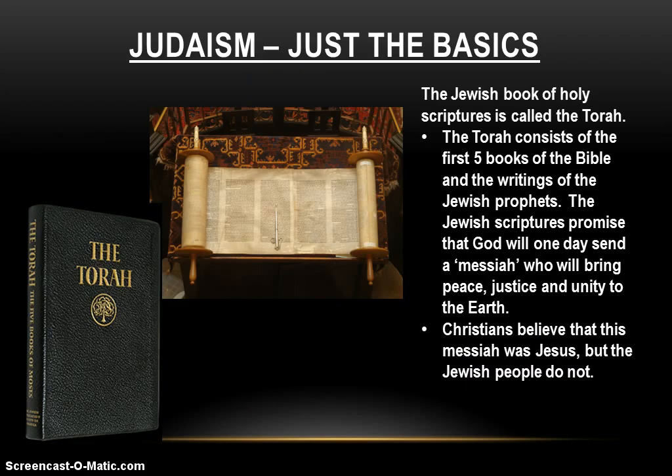The Jewish holy book of scriptures is called the Torah. From Hebrew, Torah literally translates as 'the writings.' The Torah consists of what are, for Christians, the first five books of the Bible, as well as the writings of the Jewish prophets. In fact, the Old Testament of the Christian Bible is basically the Jewish Torah. The Jewish scriptures promise that God would one day send a Messiah who will bring peace, justice, and unity to the earth — Messiah means a deliverer. Jewish people believe that this Messiah has not yet come and is still on the way. Christians, on the other hand, believe that this Messiah was Jesus. Jews do not believe this and are still awaiting the arrival of the Messiah promised by the Torah and the prophets.